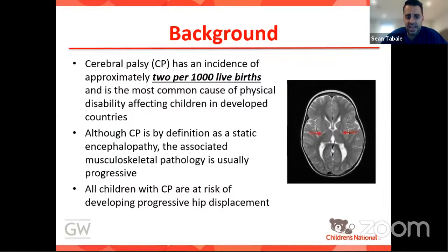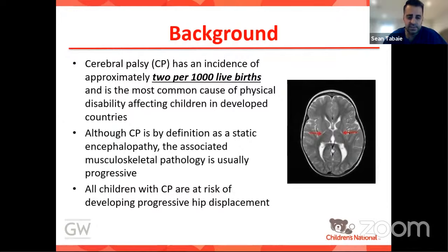CP is a static encephalopathy, but the musculoskeletal pathology is progressive. All children with CP are at risk of developing progressive hip displacement — a very important sequelae to be aware of. One key teaching point: unlike developmental dysplasia of the hip (DDH), where babies are born with their hips out, in the CP population, the hips are almost always normal at birth. It is really over time that they develop dysplasia and come to need attention.